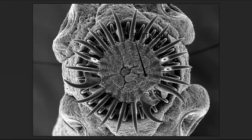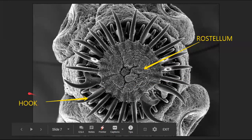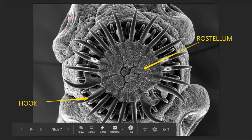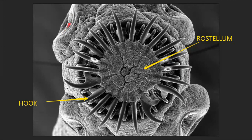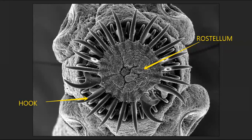This diagram shows the rostellum — the plate in the center to which the hooks are attached — and a single hook of the upper row. This is a scanning electron micrograph of the scolex from the top end of Taenia solium. You can clearly see all four suckers: one on one side, a second, a third, and a fourth sucker. That concludes the structure of the scolex and the body of Taenia solium.